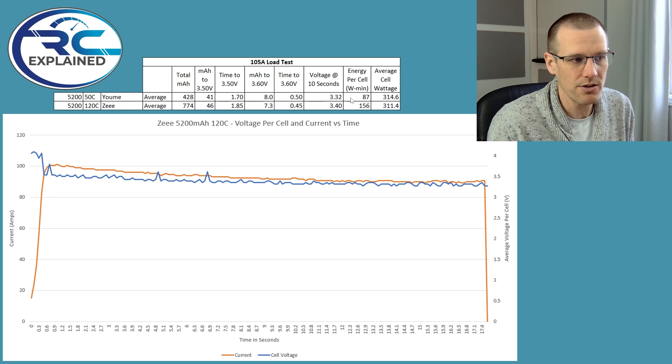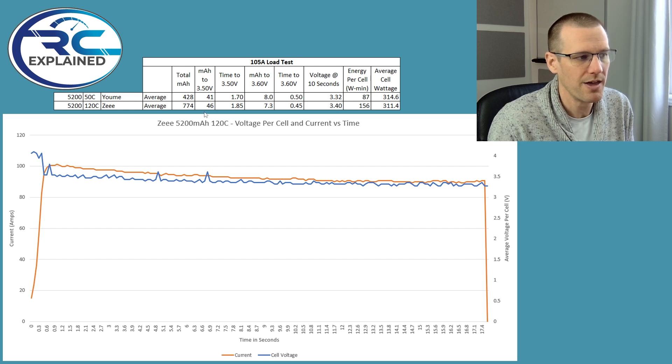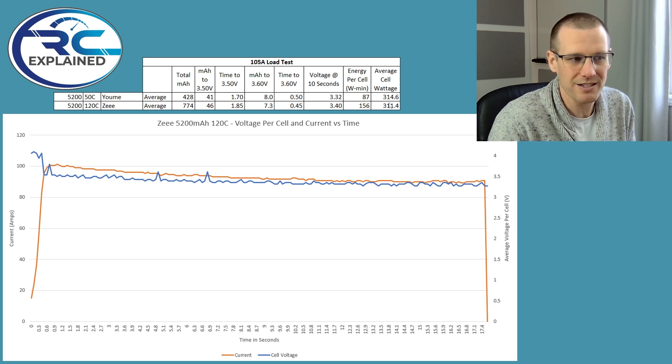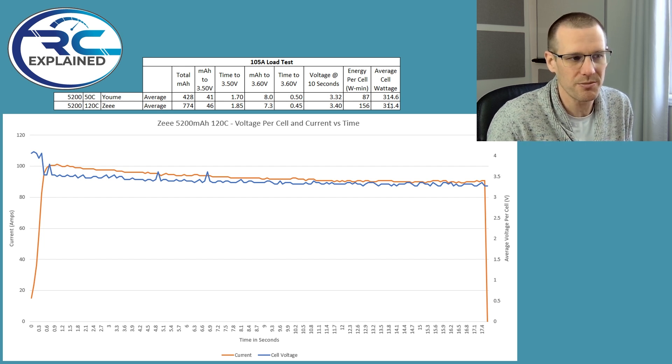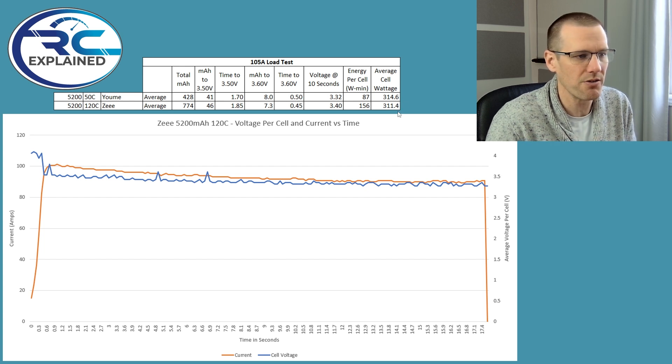The energy per cell here, the watt minutes is 87 versus 156. And that's specifically because of the milliamp hour that we're able to actually dissipate out of the Z being more. The average cell wattage is 314.6. Now keep in mind, this is only for the first 20 seconds of the pack. It doesn't really tell us a good story here. So it's almost like a value that doesn't mean too much. And then 311 out of the Z battery there for the entire duration down to that 3.3 volt cutoff.